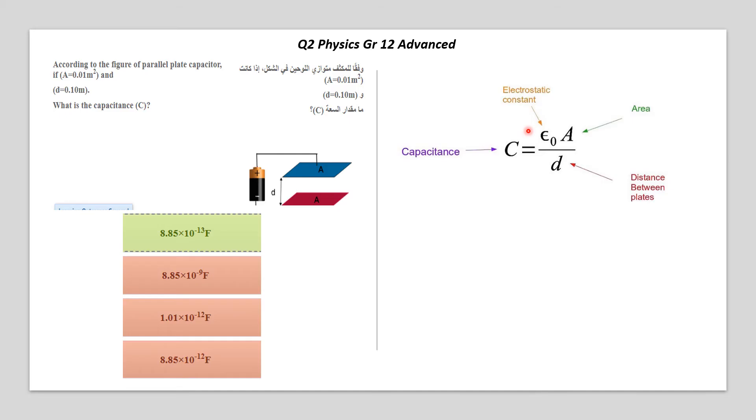Epsilon 0 is given in the first page in the exam, which is 8.85 by 10 to the power of minus 12. The area is given here, which is 0.01, and the distance is 0.1.